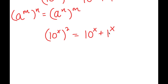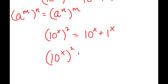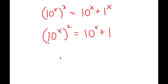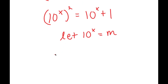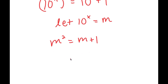Now, 1 to the power of any number is just going to be 1, so we can just get rid of this x as an exponent because it won't really change anything. So now I have 10 to the power of x squared is equal to 10 to the power of x plus 1. From here, I'm going to let 10 to the power of x equal to the variable m. So now I have m squared is equal to m plus 1, and this turns into m squared minus m minus 1 is equal to 0.